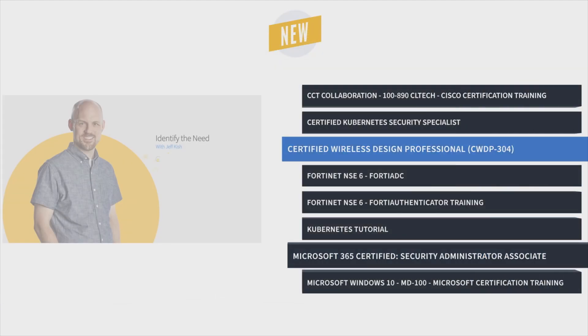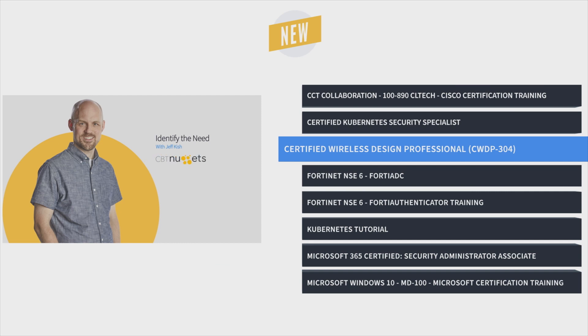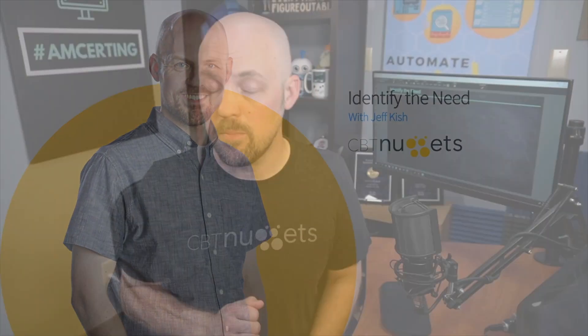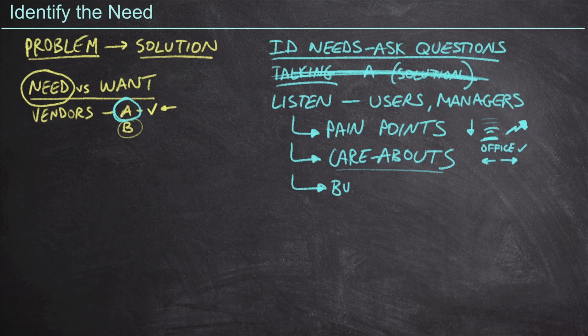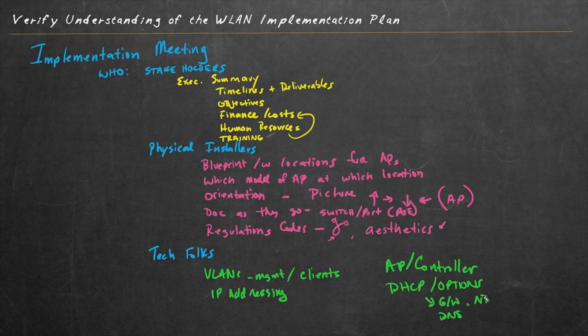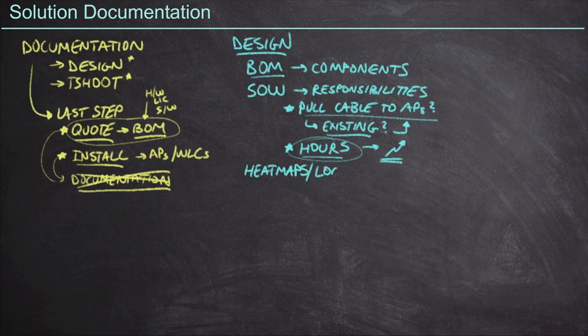Next is Certified Wireless Design Professional Training with Keith Barker and Jeff Kish. This course prepares you for the CWDP-304 certifying exam by explaining the questions you need to ask when beginning the design process, what to do with the answers, how to balance needs against costs, and how to draw up designs that will meet a network's needs.